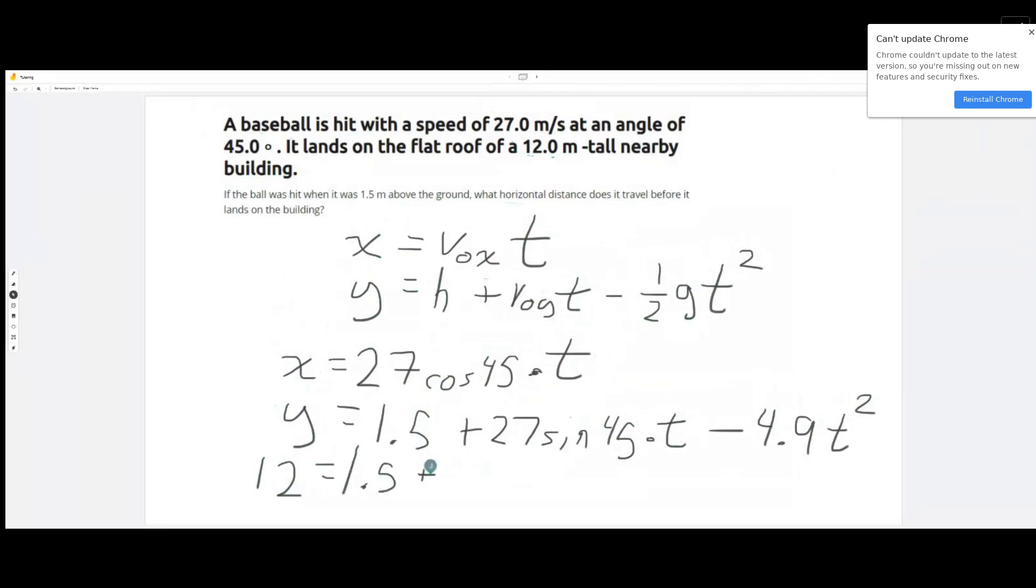We're going to set 12 equals to 1.5 plus 27 sine 45 times time minus 4.9 t squared. So you may recognize this is a quadratic equation.